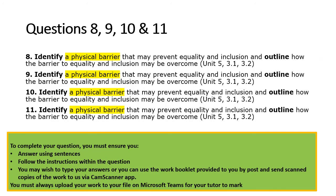This brings you to questions eight, nine, ten and eleven — all four structured the same way. For each one, identify a physical barrier that may prevent equality and inclusion, then outline how that barrier may be overcome. Think of four different physical barriers, using the slides to help you, and also do further research to find additional examples of your own.